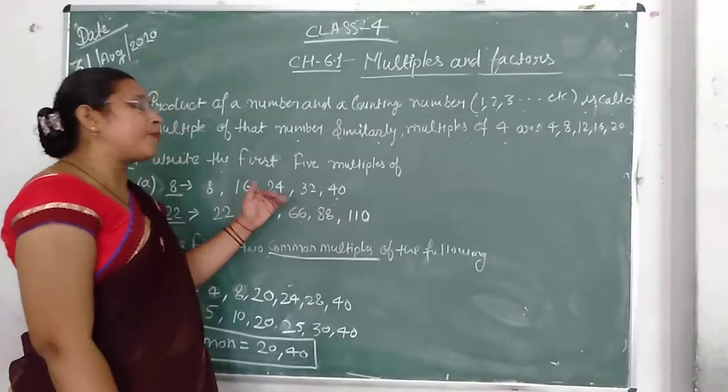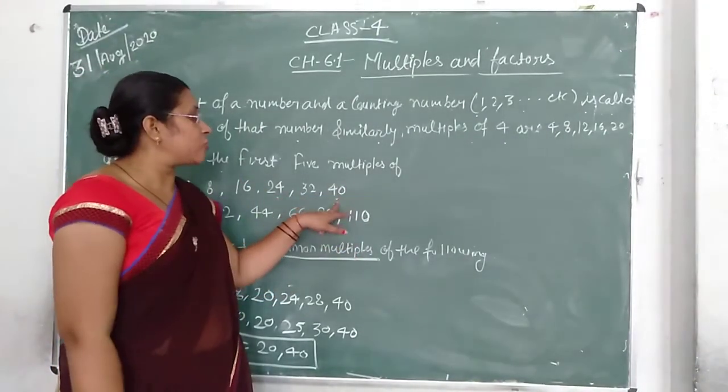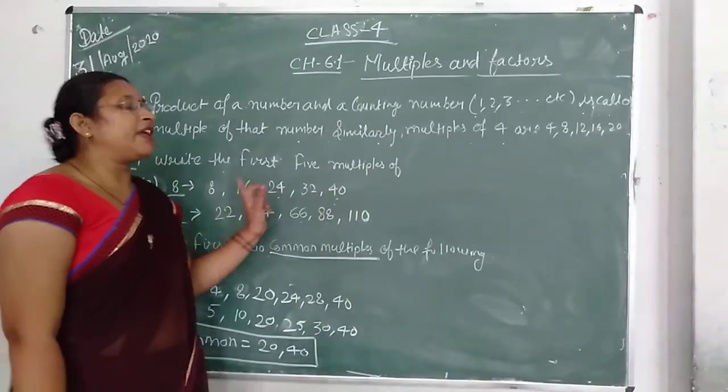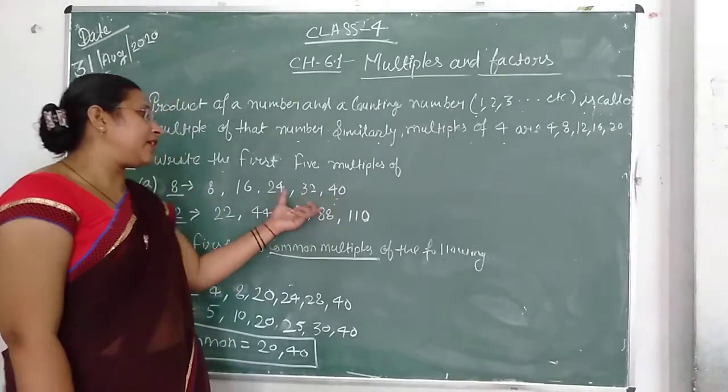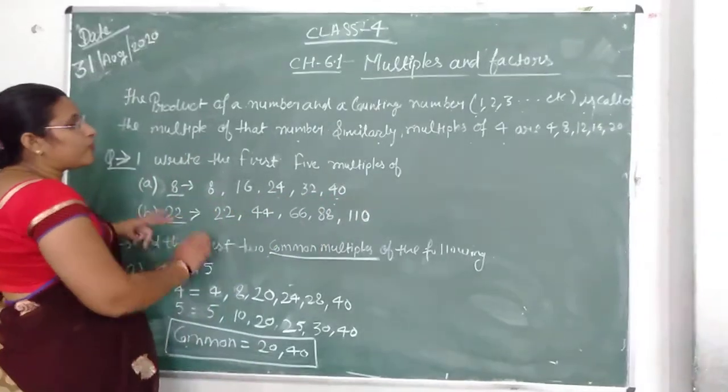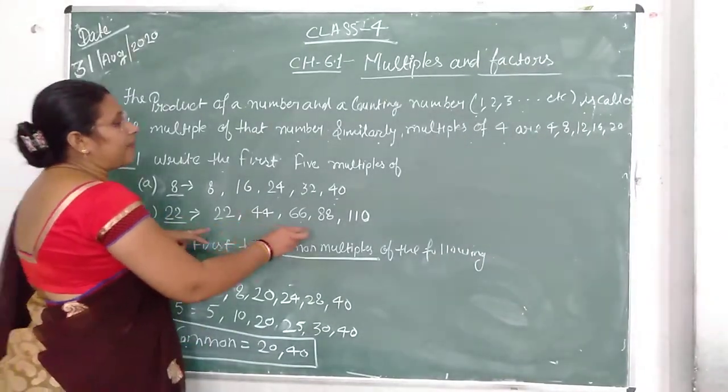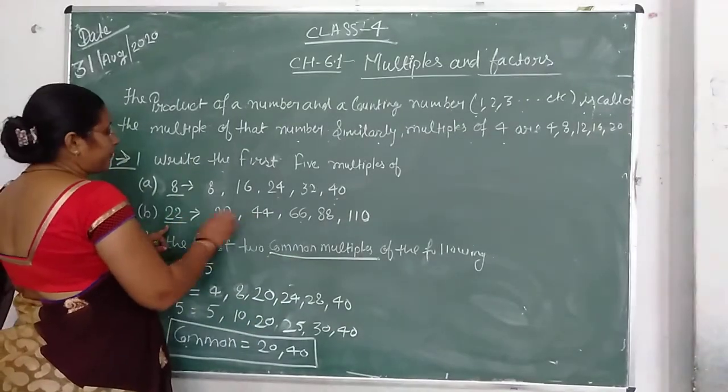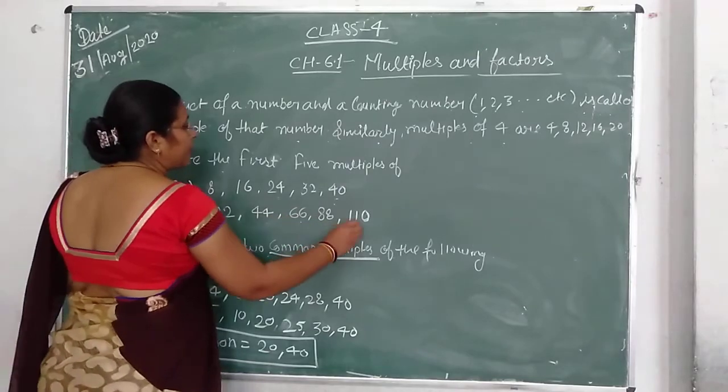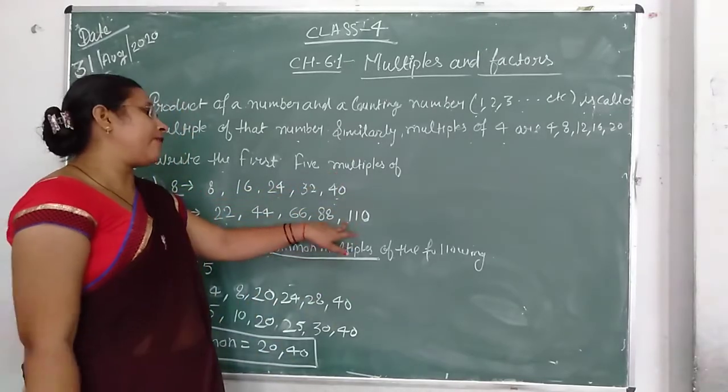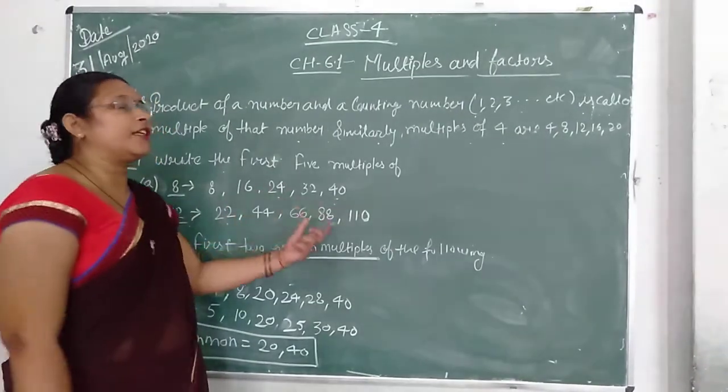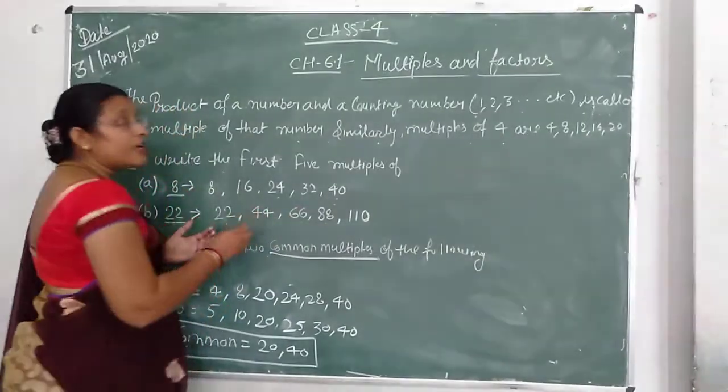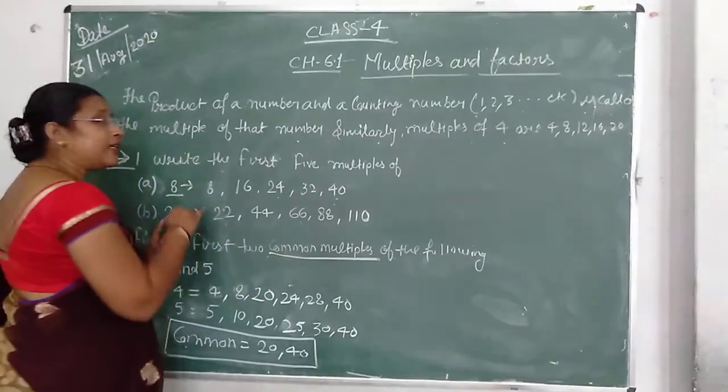This means that these numbers are completely divisible by 8. They appear in the table of 8. For example, 22 will appear in certain tables - 22 is divisible by 2, 11. Similarly, 44, 66, 88, 110 - these are five multiples. This is how you explain which tables a number appears in.